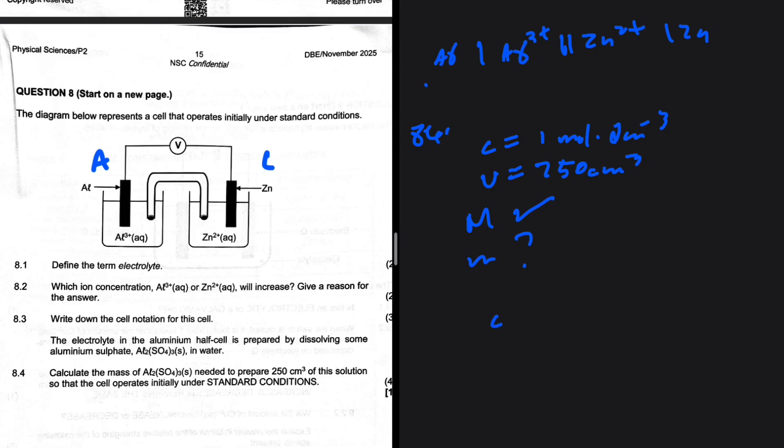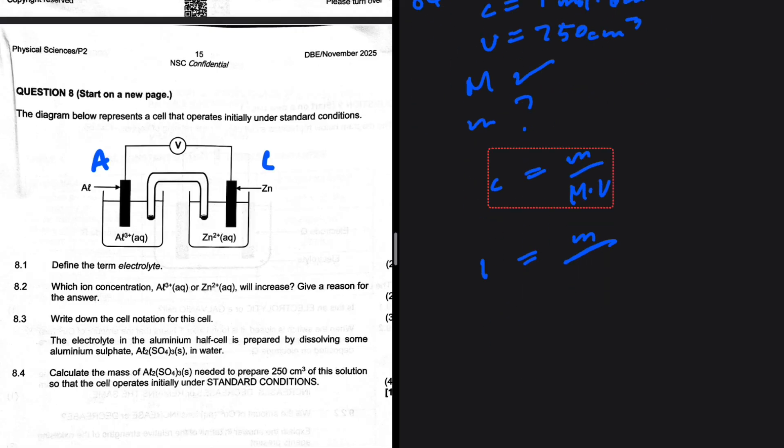Let me show you something. So we say C equals the mass divided by the molar mass multiplied by the volume. The concentration is 1. The mass is what we are interested in. And then the molar mass.